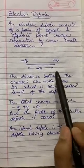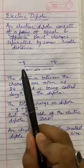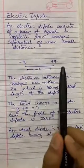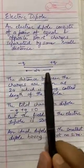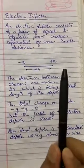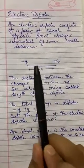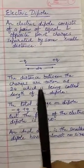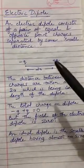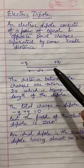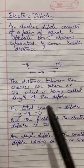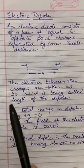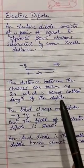As you can see in the diagram, we have equal and opposite point charges. The magnitude is the same, the direction is different, and they are separated by a small distance given by 2a. This distance is known as the length of the dipole.